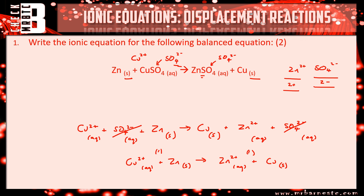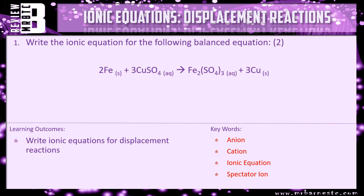That's everything in this video. Here's a review question: write the ionic equation for 2Fe + 3CuSO₄ → Fe₂(SO₄)₃ + 3Cu. You know sulfate is SO₄²−, so copper is Cu²+. On the other side, you've got SO₄²− with three of them, giving an overall charge of 6−. So your total positive charge must be 6+, but you've got two iron ions — so what is the charge of each iron? Use that to write your balanced ionic equation.